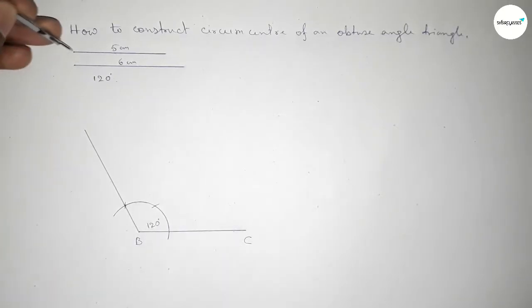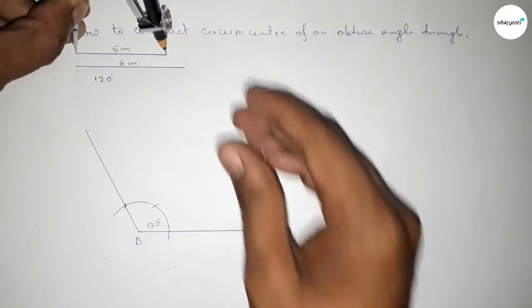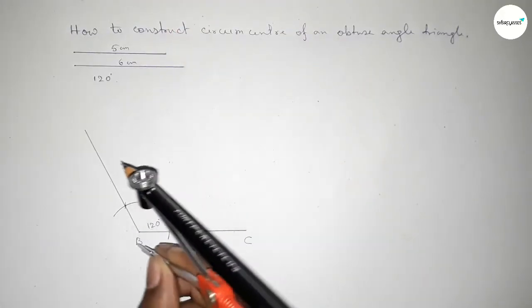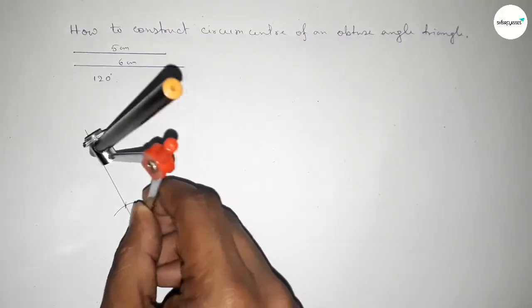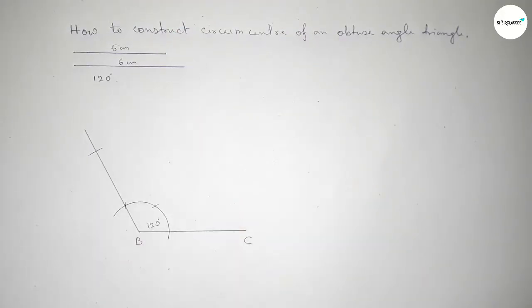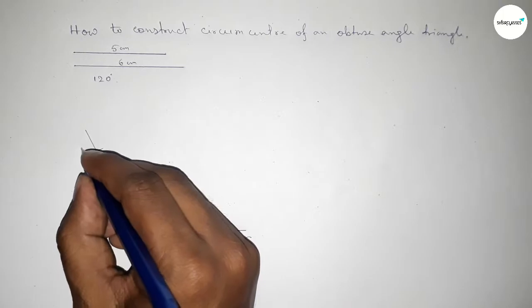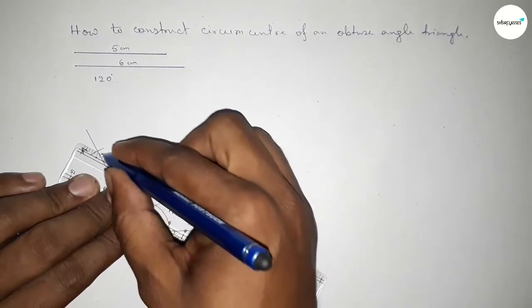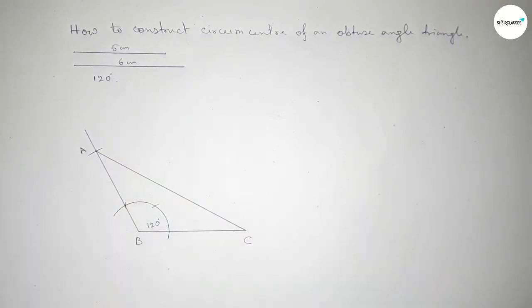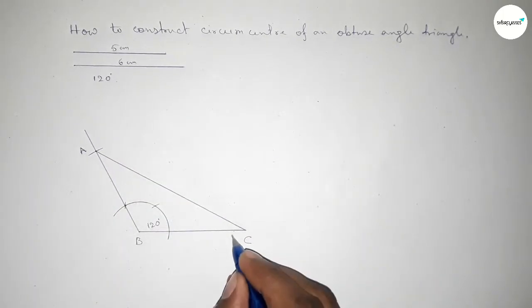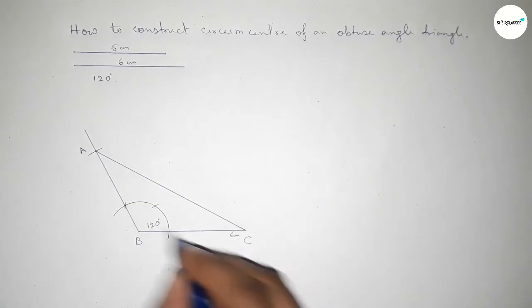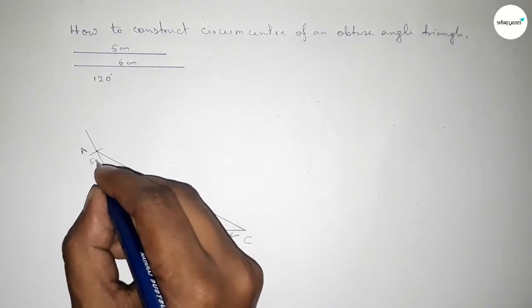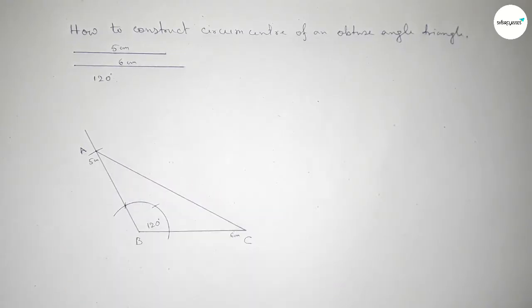Taking the length 5 centimeter, putting the compass here and cutting here, so taking here point A. Now joining A and C — so this side is 6 centimeter and this side is 5 centimeter.